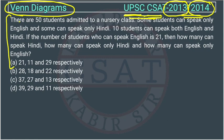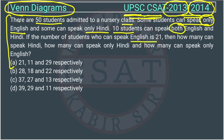There are 50 students admitted to a nursery class. Some students can speak only English and some can speak only Hindi. 10 students can speak both English and Hindi. The number of students who can speak English is 21.